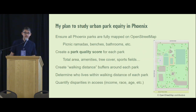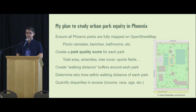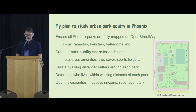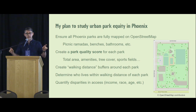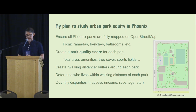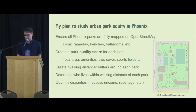This is where OSM comes in. I'm going to make sure all of these parks are fully mapped on OpenStreetMap — every picnic ramada, every bench, every bathroom and so on. Then using the data, I want to create a park quality score that takes into account things like total area, all of those amenities, how much tree cover there is, and the variety of sports fields. I'll then create buffers around each park representing a reasonable walking distance, determine who lives within walking distance of each park, and quantify any disparities that might exist in terms of income, race, and age of residents.